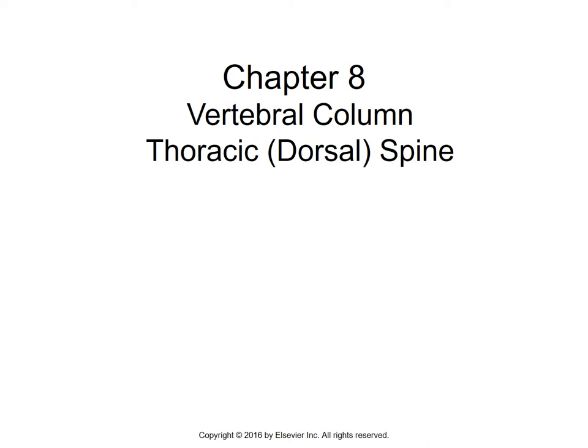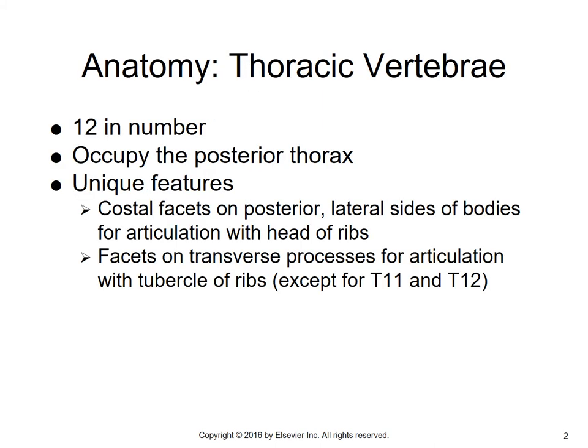Hello, today we're going to talk about the thoracic spine, or dorsal spine as it's sometimes called, and its radiographic positioning. Let's do a quick review of the anatomy of a thoracic vertebra. There are 12 thoracic vertebrae. They occupy the posterior thorax and have some very unique features — costal facets on the posterior and lateral sides of the body for articulation with the head of the ribs.